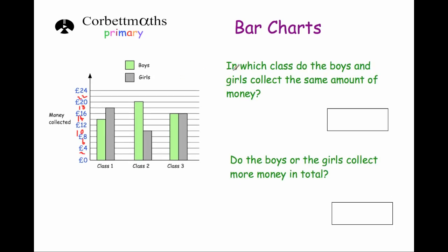The next question says: in which class do the boys and girls collect the same amount of money? In class 1 the girls bar is higher, so they collect more. In class 2 the boys bar is higher, so they collect more. In class 3 both bars have the same height, so in class 3 the boys and girls collect the same amount of money.